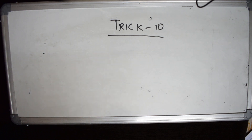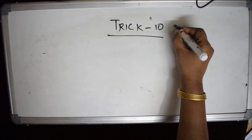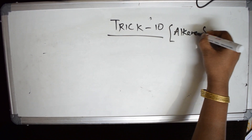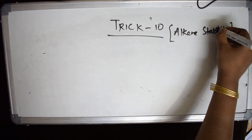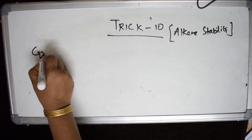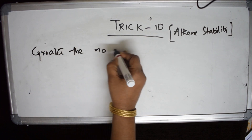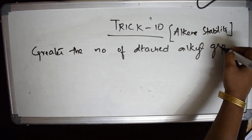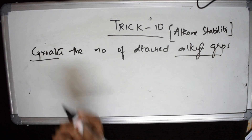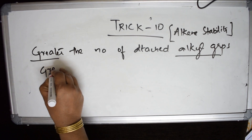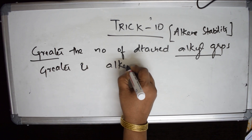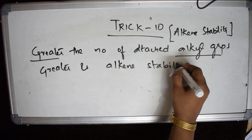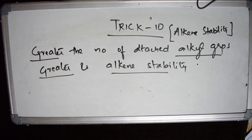Today I'll be discussing about alkene stability. So whenever a question is given based on alkene stability, what should you remember? Trick 10 is about alkene stability. The trick is: greater the number of attached alkyl groups, greater is the alkene stability. Remember this — greater the number of alkyl groups, greater is the alkene stability.